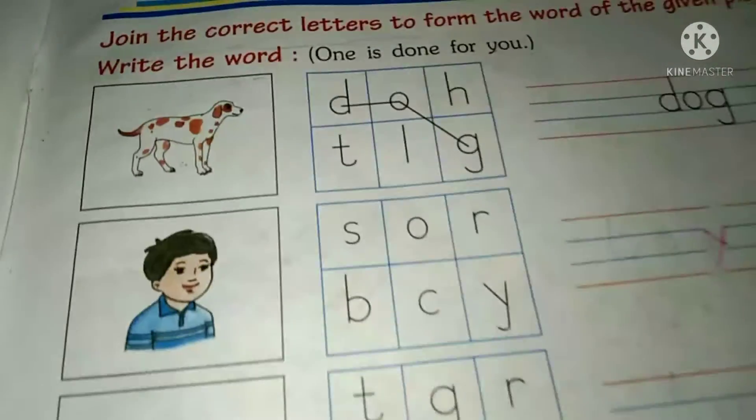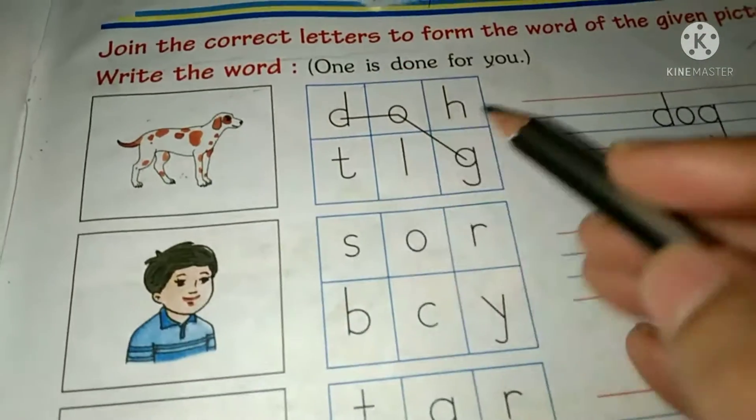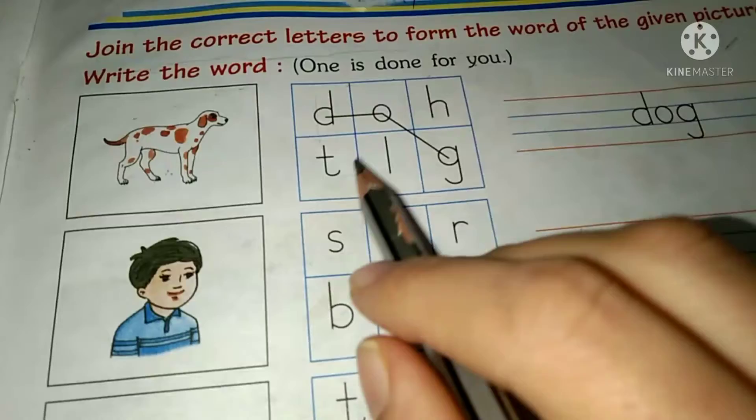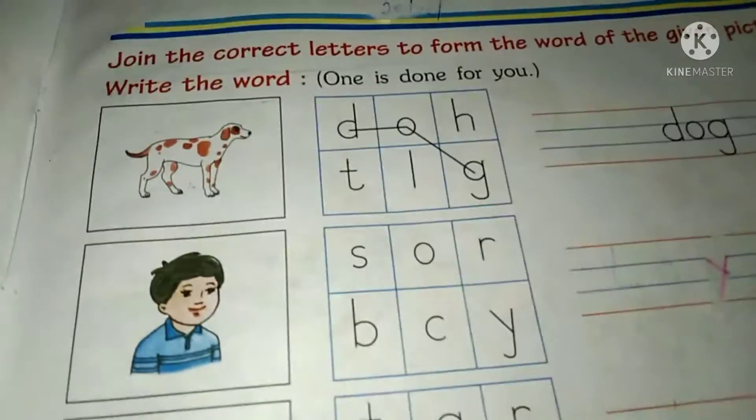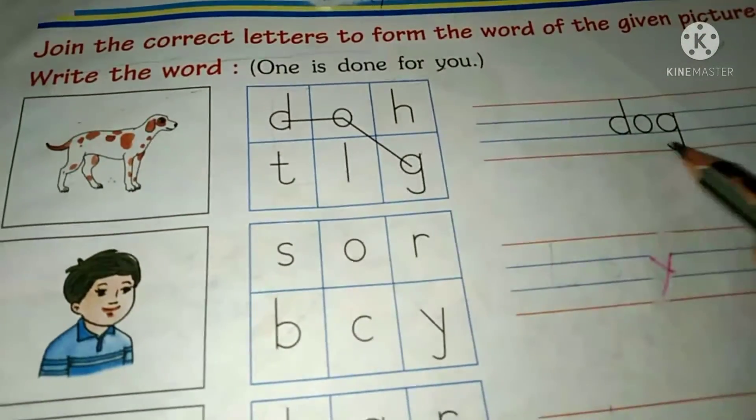Which picture is this? It is a dog. Okay? So, here in this box, letters are given. You have to join the letters and form the word.